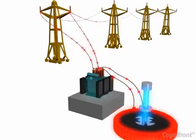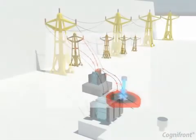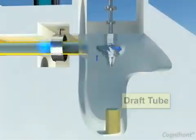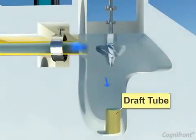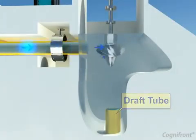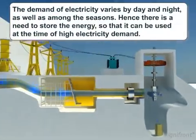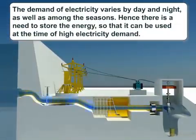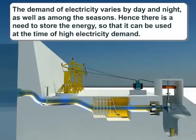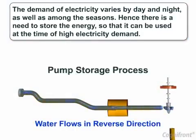The voltage of the electricity is raised by using a transformer and is transferred via distribution lines. After running the turbine, the water is passed to the downstream water level by a draft tube. Since electricity demand varies by day, night, and season, there is a need to store energy for times of high demand. This can be done using a pump storage process.